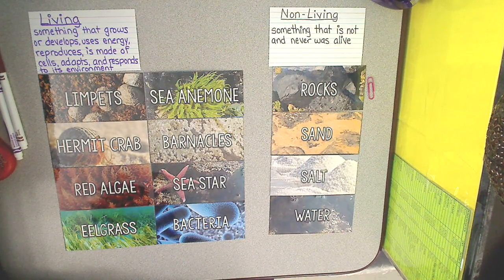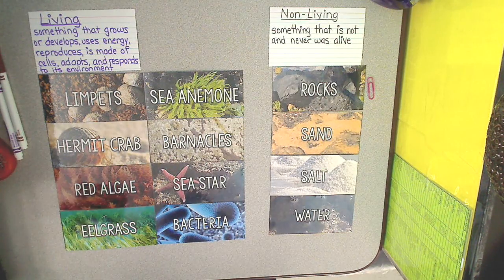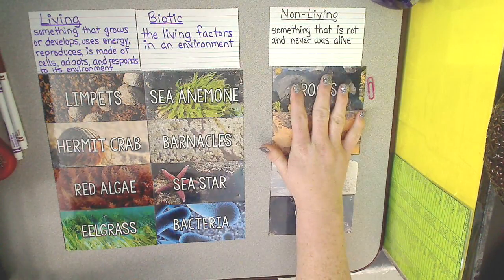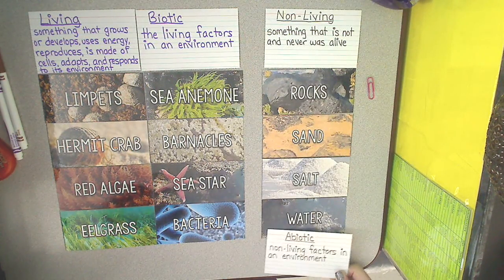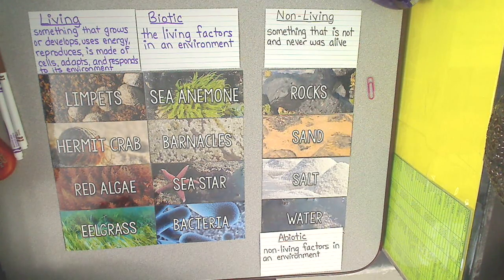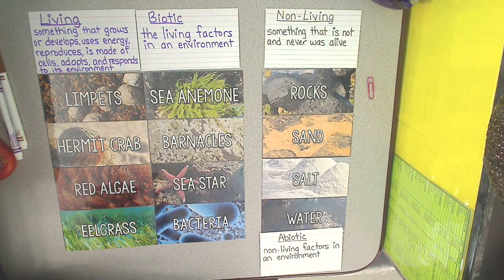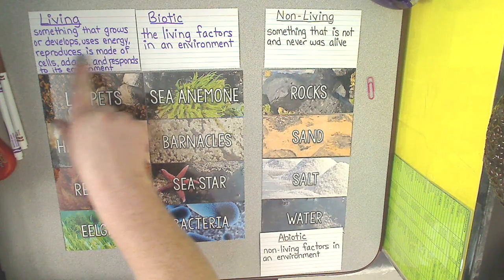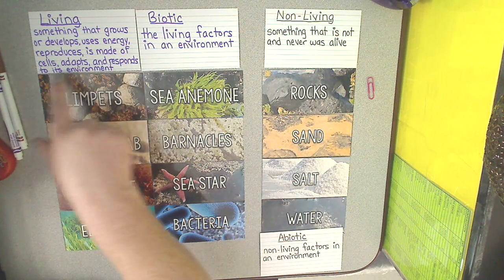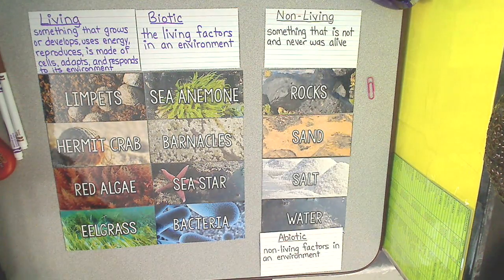As you're going through the next pieces of this unit, make sure that you are not only thinking about the definitions for living and non-living, but also thinking about biotic and abiotic as well. In the next assignment you will be asked to sort and determine whether given organisms or items are living or non-living. Just remember: living is something that grows, develops, uses energy, reproduces, is made of cells, and adapts and responds to its environment. Thanks everybody, see you next time!